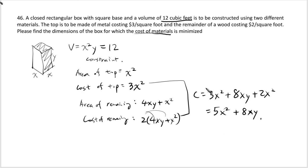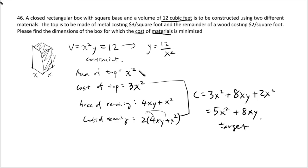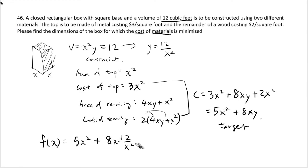We have the cost function 5x² + 8xy as our target and x²y = 12 as our constraint. Solve the constraint for y by dividing by x²: y = 12/x². Substitute into the cost: C(x) = 5x² + 8x·(12/x²) = 5x² + 96/x.